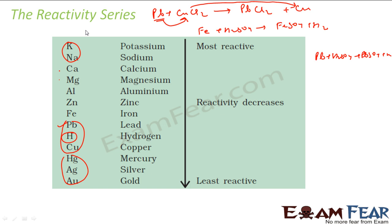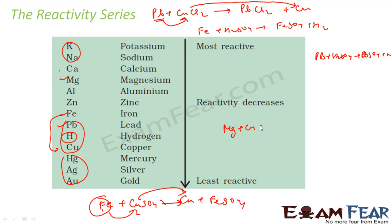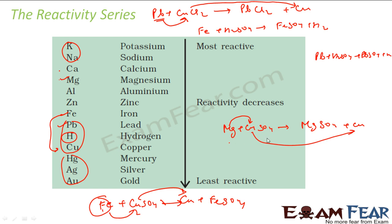For example, to find the reactivity of iron and copper: take iron, add it to copper sulfate solution, and you get copper plus FeSO4. That means iron has kicked out copper from the solution, so iron is more reactive than copper. Similarly, manganese plus copper sulfate gives MnSO4 plus copper, so manganese is more reactive than copper.